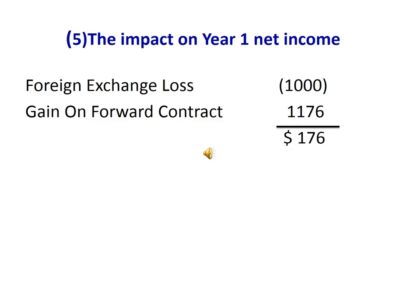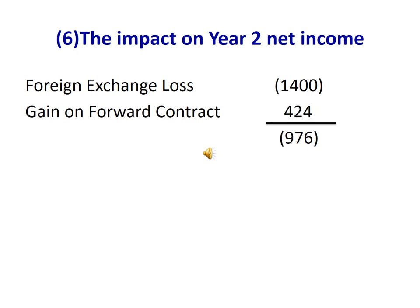The change in the fair value of the hedging instrument, which is the gain on the forward contract, and the change in the fair value of the hedged item, which is the foreign exchange loss, should be recognized in the same period in the income statement. For year 2, the foreign exchange loss was $1,400 and the gain on the forward contract was $424, resulting in a net loss of $976.